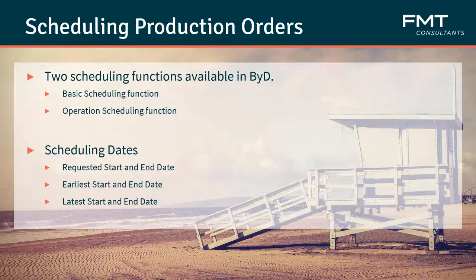The latest start and end date: the latest start date is the very last date by which production must be started to fulfill the production order in time. However, if you do not start production until the latest start date, you can still fulfill the production order on time, but the end date may actually collide with the requested ending of the production order or operation.